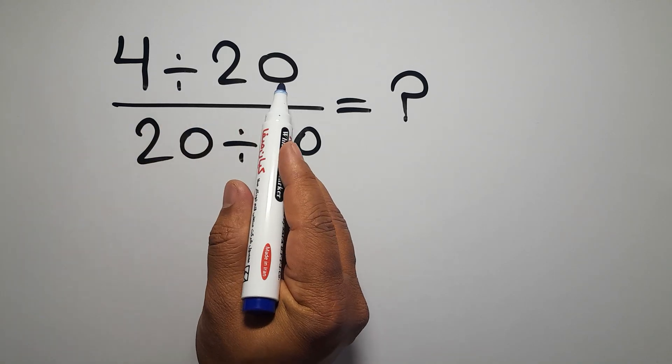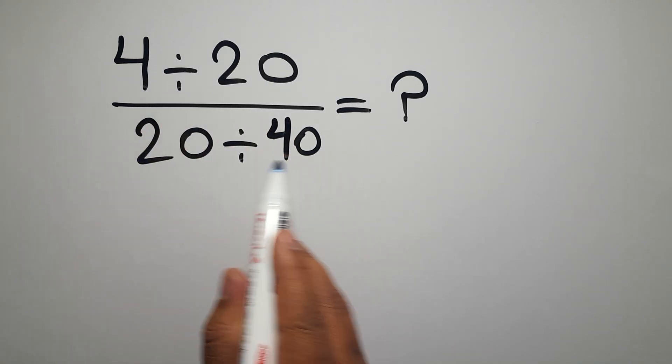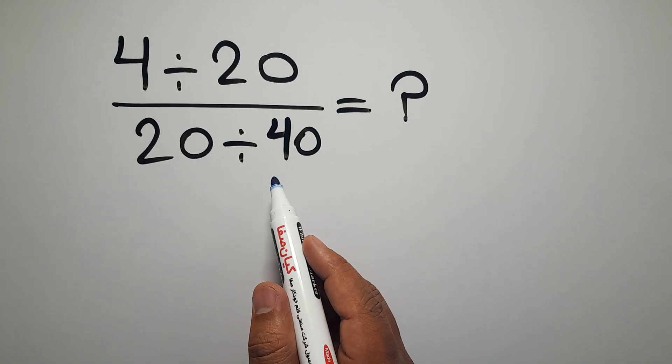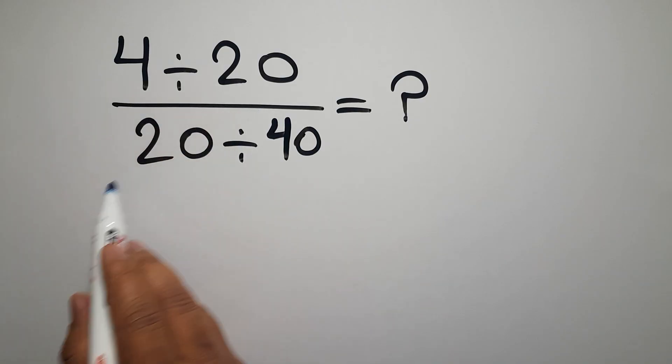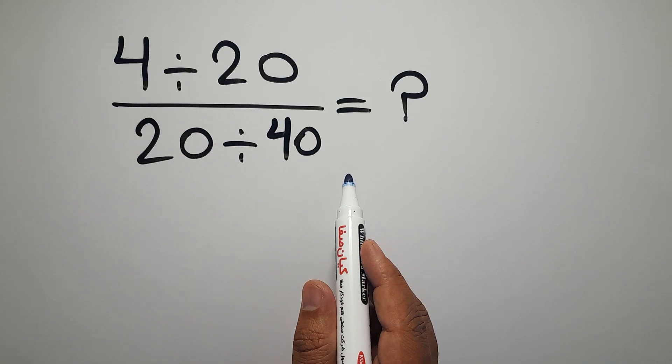4 divided by 20 over 20 divided by 40. Our goal is to find the value of this fraction. Are you ready to solve? Let's go down to start it.